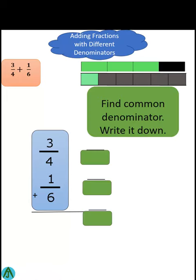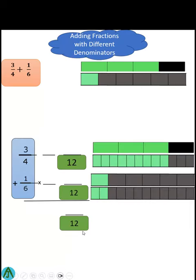Second, find the common denominator and write it down for both addends and the sum. There it is.